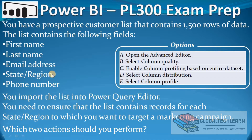The question is: you have a prospective customer list that contains 1500 rows of data. The list contains the following fields: first name, last name, email address, state region, and phone number. You import the list into Power BI Query Editor. You need to ensure that the list contains records of each state region to which you want to target a marketing campaign. Which two actions should you perform?